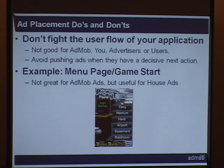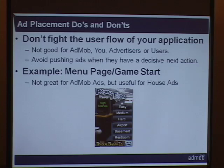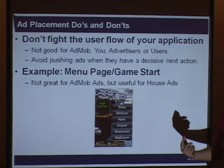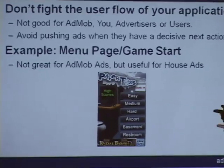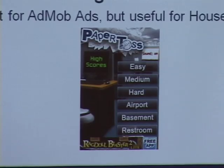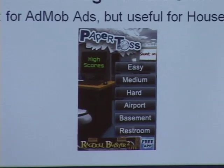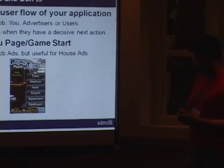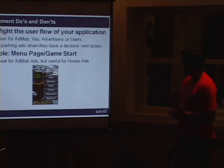A general thought: avoid pushing ads when a user has a decisive next action they're going to take. If you have a video application and a user is thinking about clicking on a soccer video and has the next action in mind, putting an ad there doesn't make sense because they're not likely to click on it and might regard it as spammy. An example of this is Paper Toss. Paper Toss did a smart thing by taking the menu page — the first page somebody sees — and using that inventory for house ads rather than showing a paid ad, which makes sense because their users come back often. That spot may be better for showcasing their other apps than trying to make money off it. Inventory is always useful for something, but it may not always be useful for a paid ad.